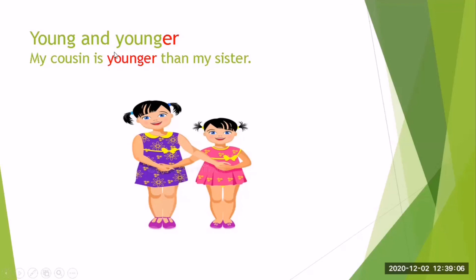Young and younger — joven, más joven. My cousin — cousin significa tanto primo como prima. My cousin is younger than my sister. Mi prima es más joven than my sister. That's it. Gracias. ¿Quién es más pequeño?